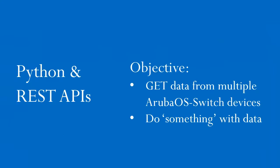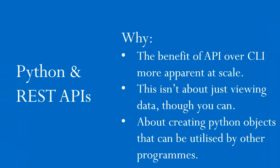Here's the objective: to get data from multiple Aruba OS switch devices, and then we're going to do something with that data, rather than just view it. The benefits of using an API over the CLI are much more apparent at scale.